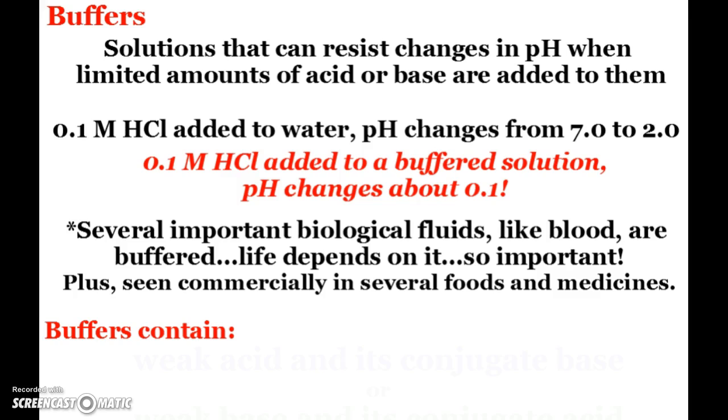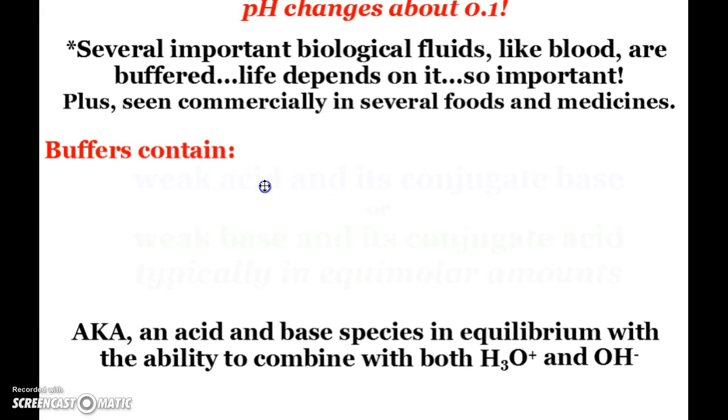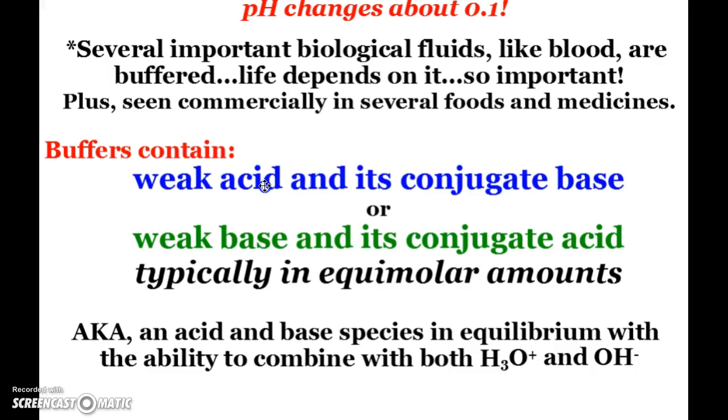And we can also see them commercially in different foods and medicines. So what do buffers contain? Buffers contain a weak acid and its conjugate base, or a weak base and its conjugate acid. That's obviously why we're studying this here now during our acid and base equilibria section. Typically, these tend to be in equimolar amounts or very close to each other as far as molarity is concerned.